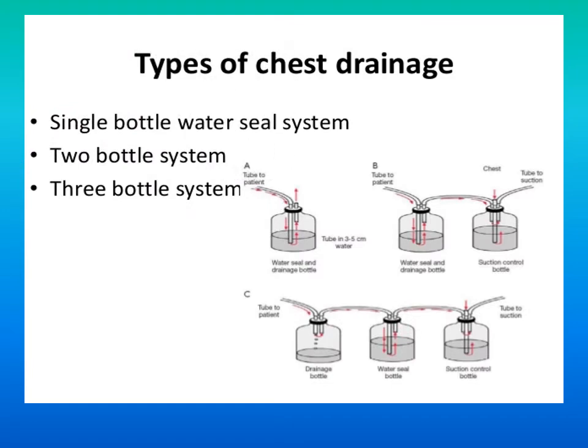The types of chest drainage systems include the single bottle water seal system, the two bottle system, and the three bottle system. Various types are available.